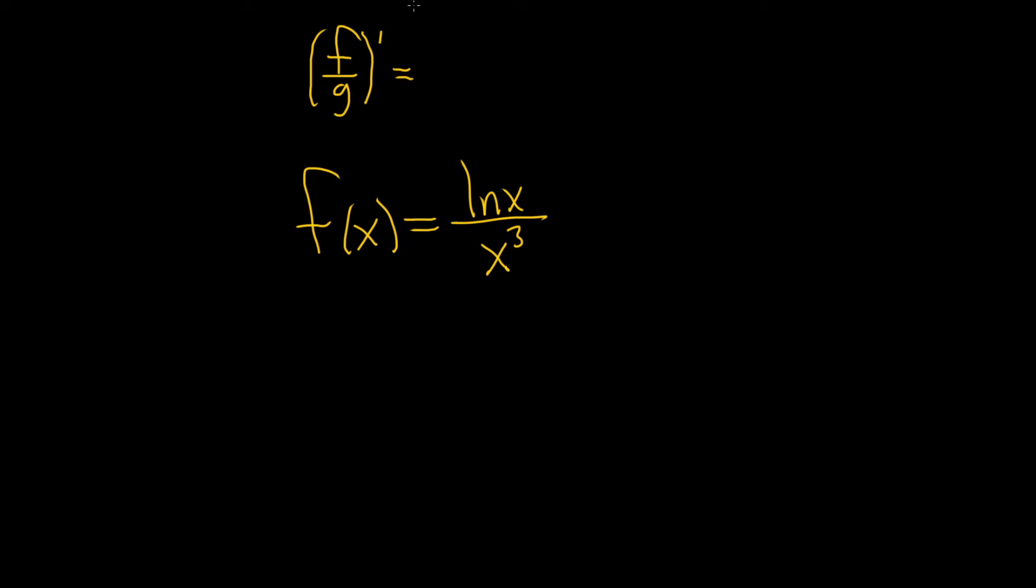Think of f as your top function and g as your bottom function. So it's the derivative of the top times the bottom minus the top times the derivative of the bottom all over the bottom one squared. So it takes a little bit of getting used to when you're first learning this formula.